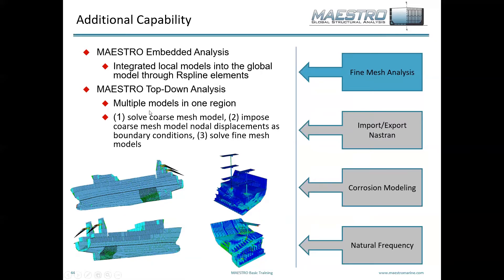With the top-down analysis, you solve the coarse mesh model while ignoring the fine mesh in that area. Then you take this global coarse mesh model and impose the boundary conditions from the coarse mesh solution onto the fine mesh, and solve the fine mesh model. The advantage is that you can have multiple different versions of the fine mesh model using the top-down approach, whereas with the embedded analysis, you're replacing that portion of the hull, so it's incorporated into the global solution.